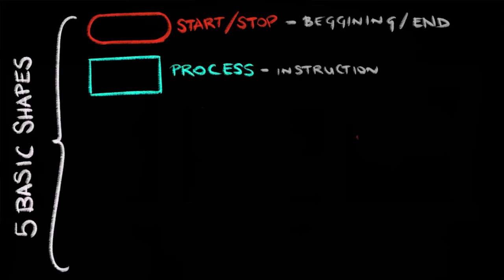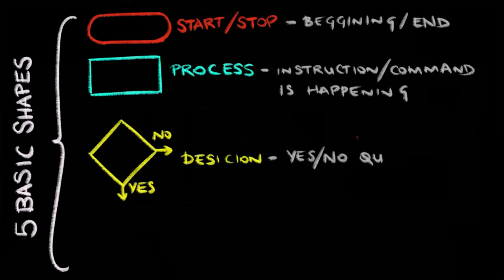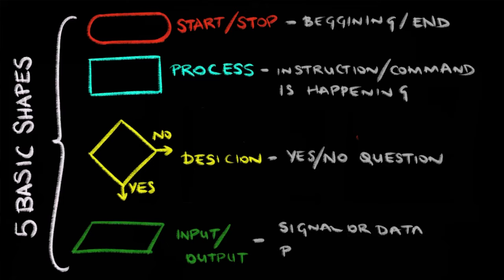Flowcharts are made up of five basic shapes. First, the start or stop shape, used at the beginning of the flowchart and at the very end when needed. Second, the process, where an instruction or command is happening. Third, the decision, where a yes or no answer is being asked. And fourth, the input or output, where a signal or data is being put in or out of the system.